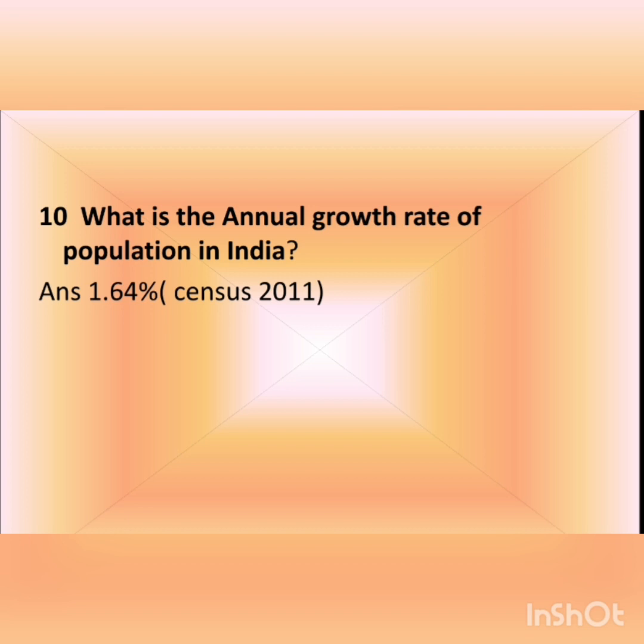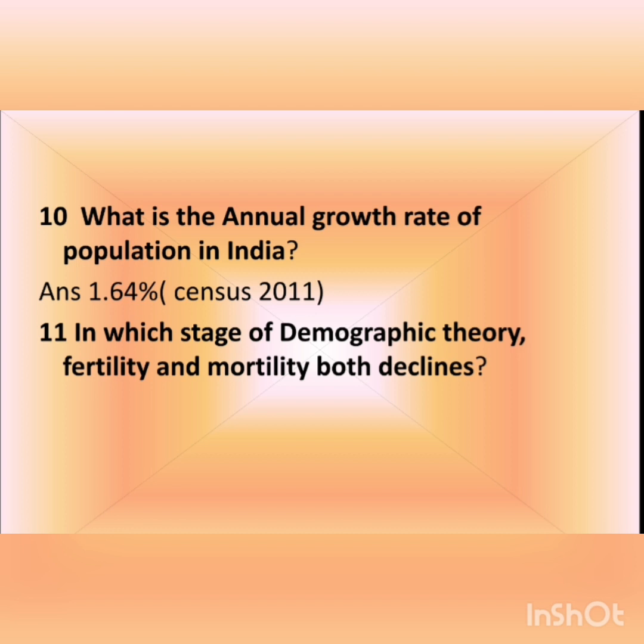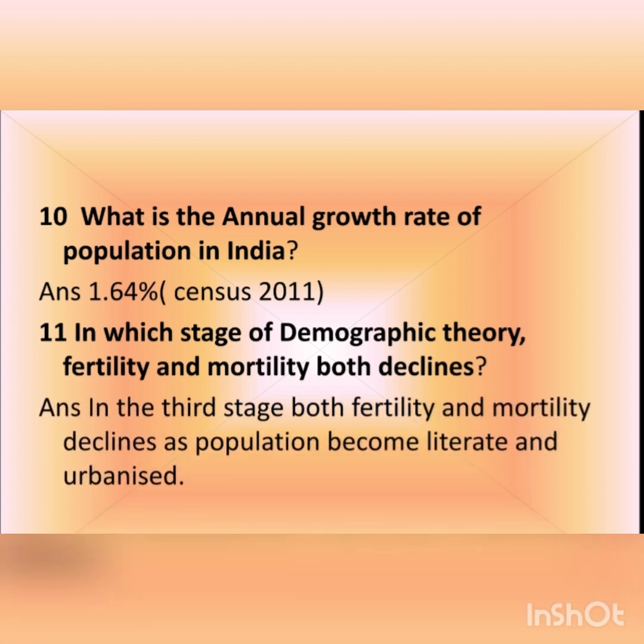The eleventh question is: in which stage of demographic theory do both fertility and mortality decline? The answer is in the third stage — the last stage of demographic transition theory — where fertility and mortality both decline as the population becomes literate and the area becomes more harmonized.